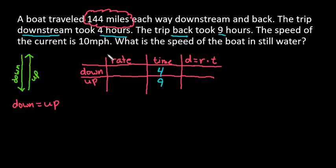And the rate is where you really have to think about this. So I'm going to let R be the rate or the speed of the boat in still water. So this is how fast the boat is going. Going downstream, we're going to have the rate of the boat in still water plus we're going to have the current, which is 10.